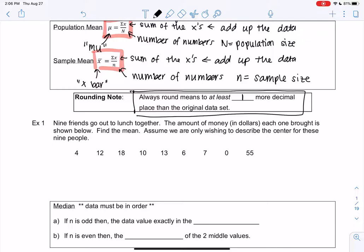So we have nine friends in our first example. Nine friends go out to lunch together, and they each bring money. The amount of money in dollars each friend brought is shown below. We want to find the mean, and we're going to assume we're only describing the center for these nine people. So that last sentence is telling me that we're only describing these nine people, meaning they represent the whole population. They're not a sample of a bigger group of friends, they are the population. So that tells us to use the symbol mu rather than x bar.